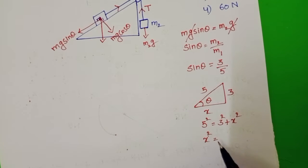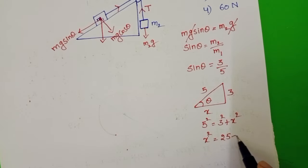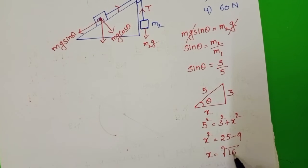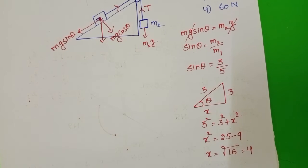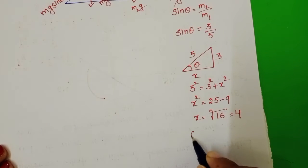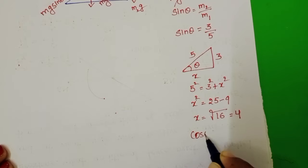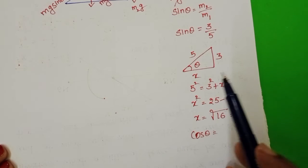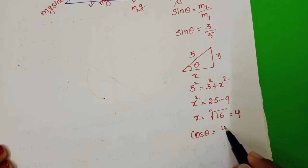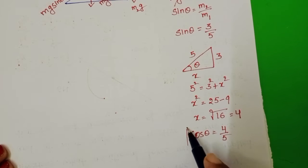5 square equals 3 square plus x square. Then x square equals 25 minus 9. X equals square root of 16 that equals 4. So cos theta equals 4 by hypotenuse is 5. Cos theta equals 4 by 5.